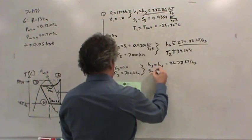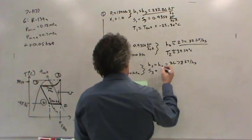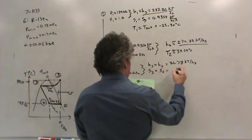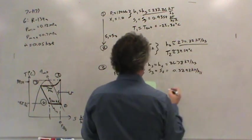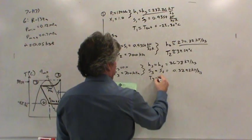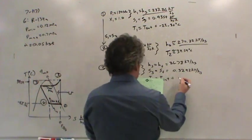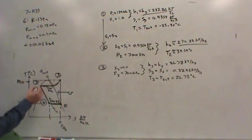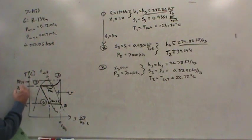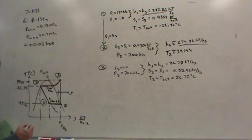The entropy in state three is Sf, 0.3242 kilojoules per kilogram per kelvin. The temperature is the saturation temperature at 700 kilopascals, 26.72 degrees Celsius. Now I can make my diagram look nice by putting in this temperature and the entropy at state three. Things are going well.